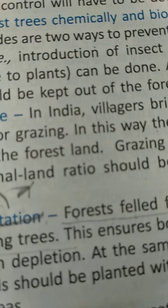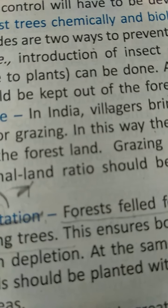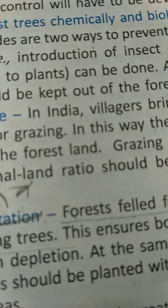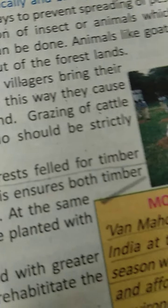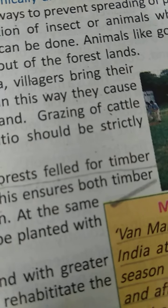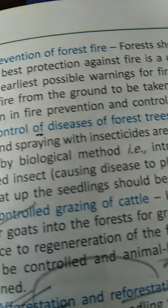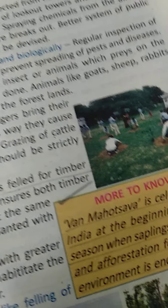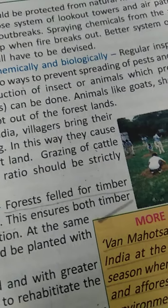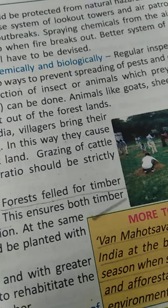Control of diseases and pests in forestry requires chemical and biological regular inspection in parts of the forest, and spraying of insecticides. There are two ways to prevent spreading of pests and diseases: biological control — introducing insects or animals which prey on the unwanted insects causing disease to plants. Animals like goats, sheep, and rabbits which eat up seedlings should be kept out of forest land so that new trees can grow.